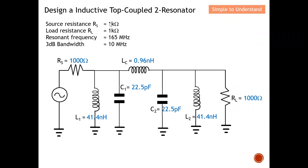To conclude: this is the task given — design a Top inductive coupled two-resonator — and all the values calculated earlier are denoted in the final diagram. From this you can achieve a bandpass filter centered at 165 MHz with a bandwidth of 10 MHz.